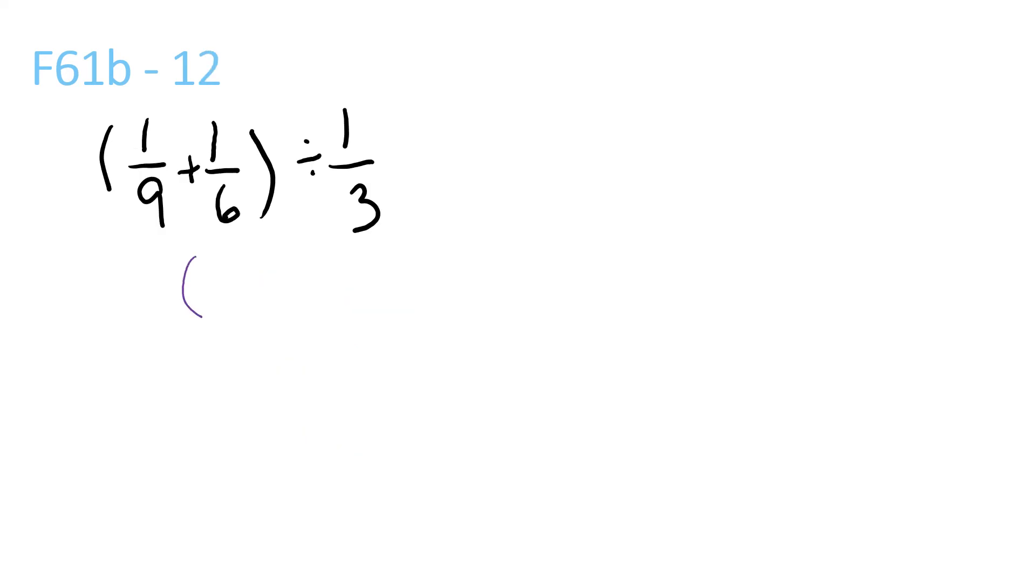9 and 6 is 18, the LCM. So it's 2 over 18 plus 3 over 18. And then you have divided by 1 over 3. So turn that into multiplication. Just flip it.